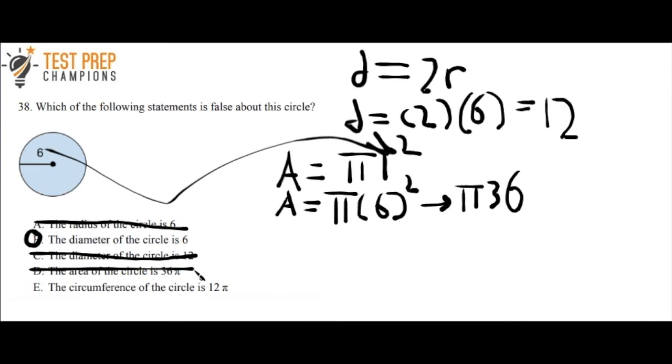Now for the circumference of the circle, we need another formula. The circumference equals 2πr. All we have to do is, since the radius is 6, let's plug that in and test this out.